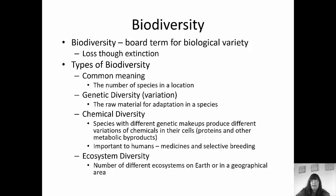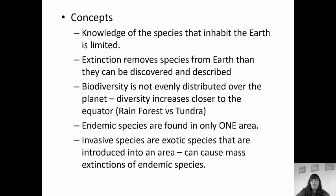We also have genetic diversity, which is actually variation within species — it's the raw material for adaptations to occur. We have chemical diversity, which means species with different genetic makeups are going to produce different variations of chemicals in their cells, so they'll have different metabolic byproducts and different proteins. Finally, we also have ecosystem diversity, which is the number of different ecosystems on Earth or in a particular geographical area.